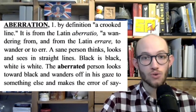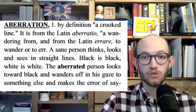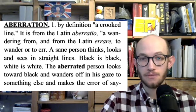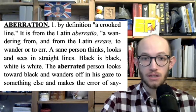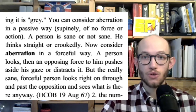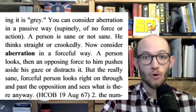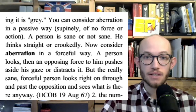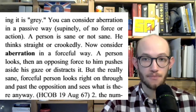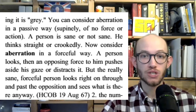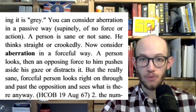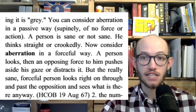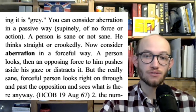Let's start off with aberration. This is what Hubbard has written in his dictionary. By definition, a crooked line. It is from the Latin aberratio, a wandering from, and from the Latin erare, to wander or to err. A sane person thinks, looks, and sees in straight lines. Black is black. White is white. The aberrated person looks towards black and wanders off in his gaze to something else and makes the error of saying it is gray. You can consider aberration in a passive way — supinely, of no force or action. A person is sane or not sane. He thinks straight or crookedly. Now consider aberration in a forceful way: a person looks, then an opposing force pushes aside his gaze or distracts it. But the really sane, forceful person looks right on, through, and past a position and sees what is there anyway. From HCOB, 19th of August, 1967.